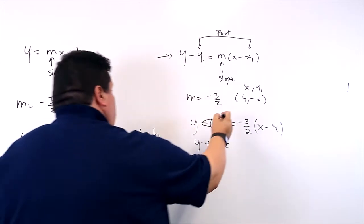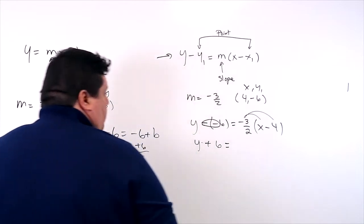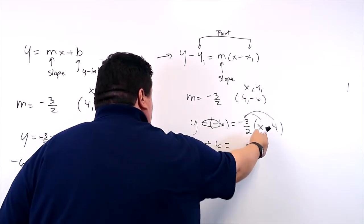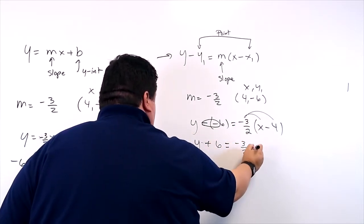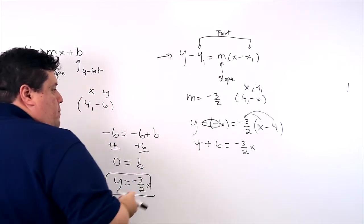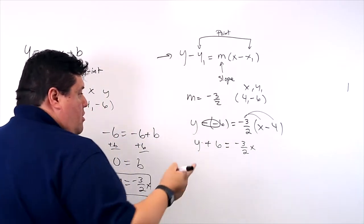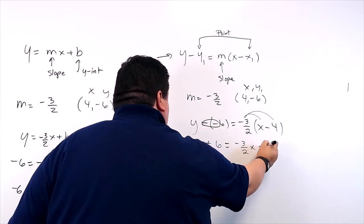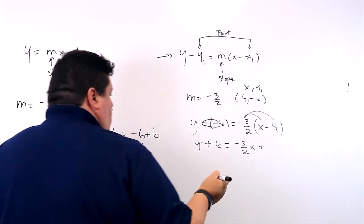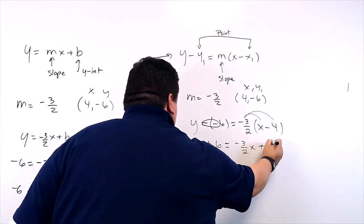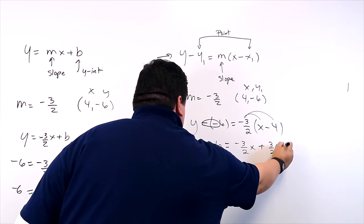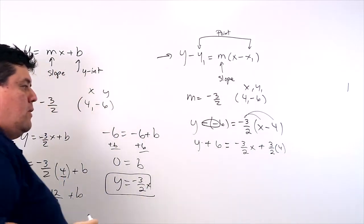Equals. And we're going to distribute. So negative 3 over 2x is negative 3 over 2x. And then let's take care of the signs here. Negative times negative is a positive, so we don't have to deal with the signs. 3 over 2. 3 over 2 times 4.